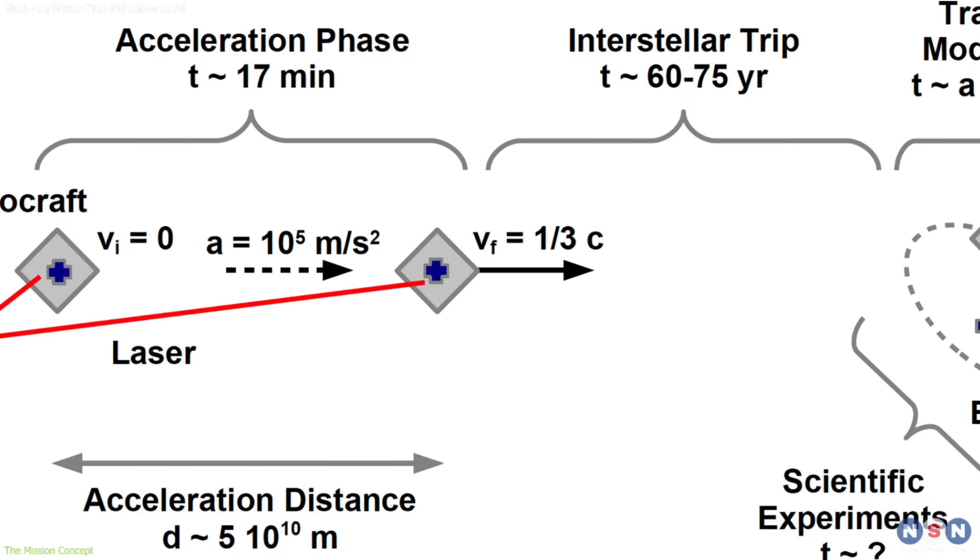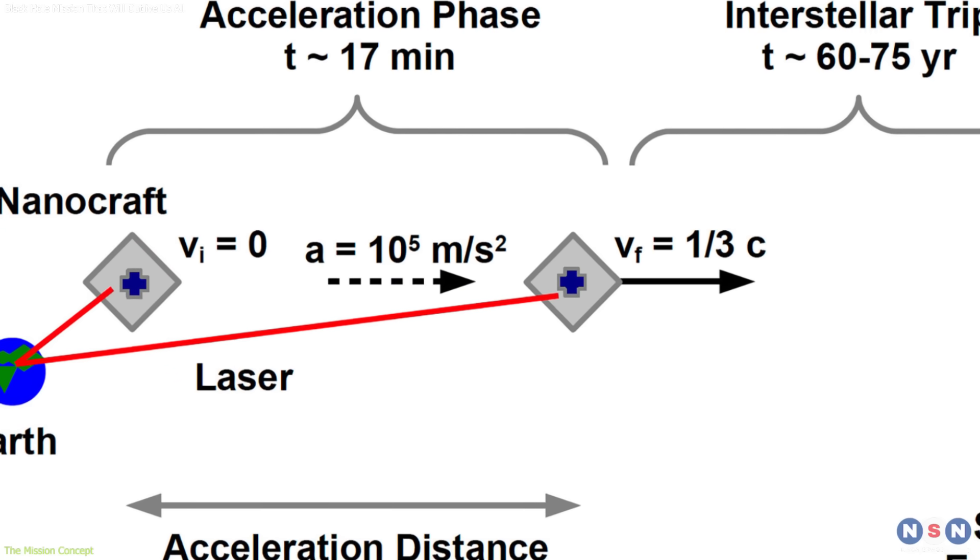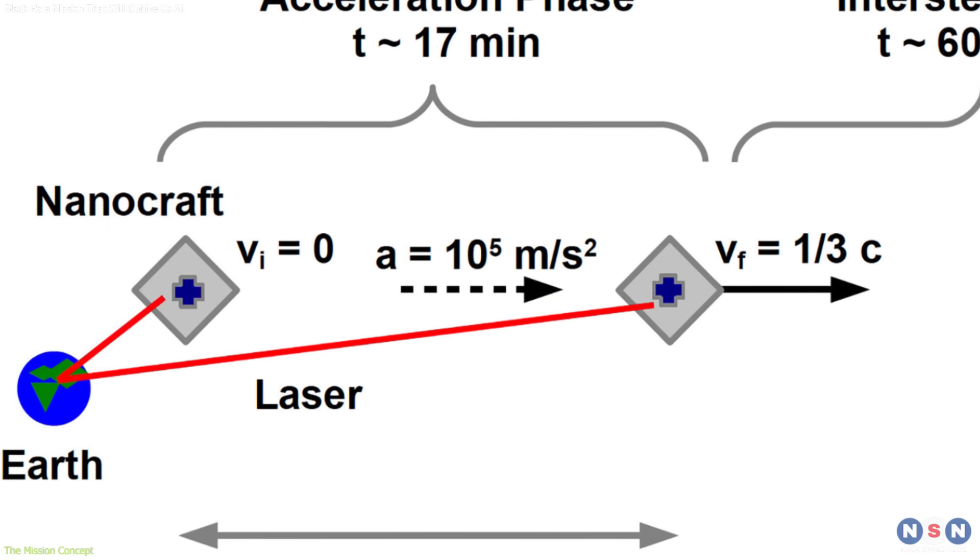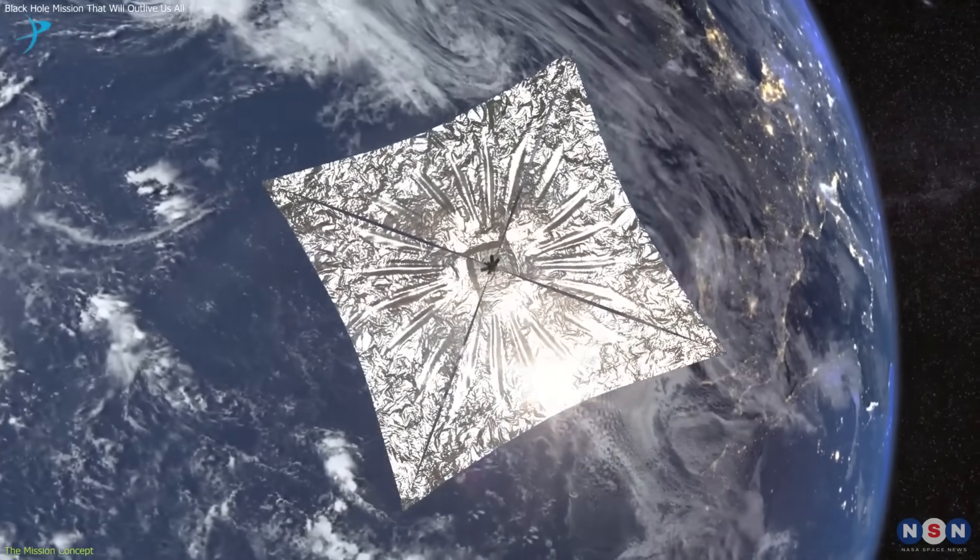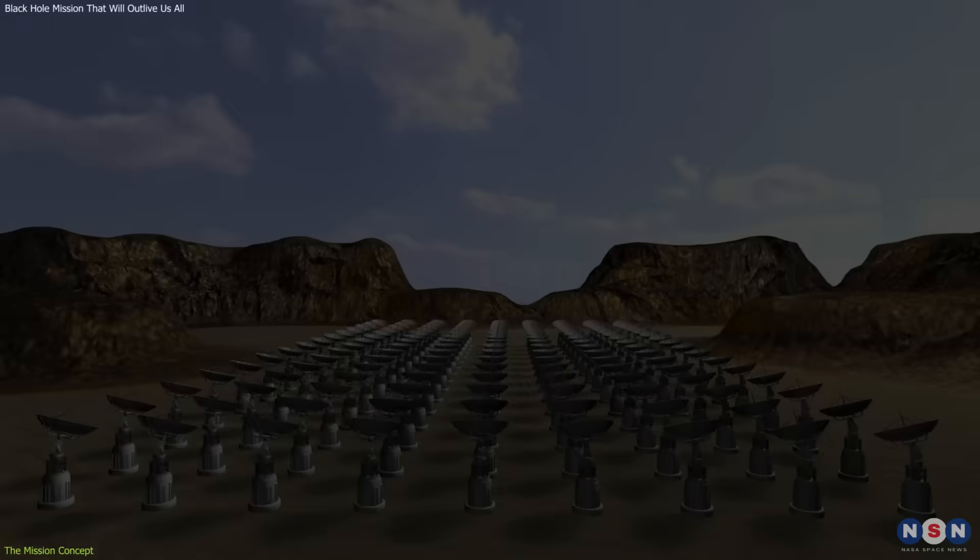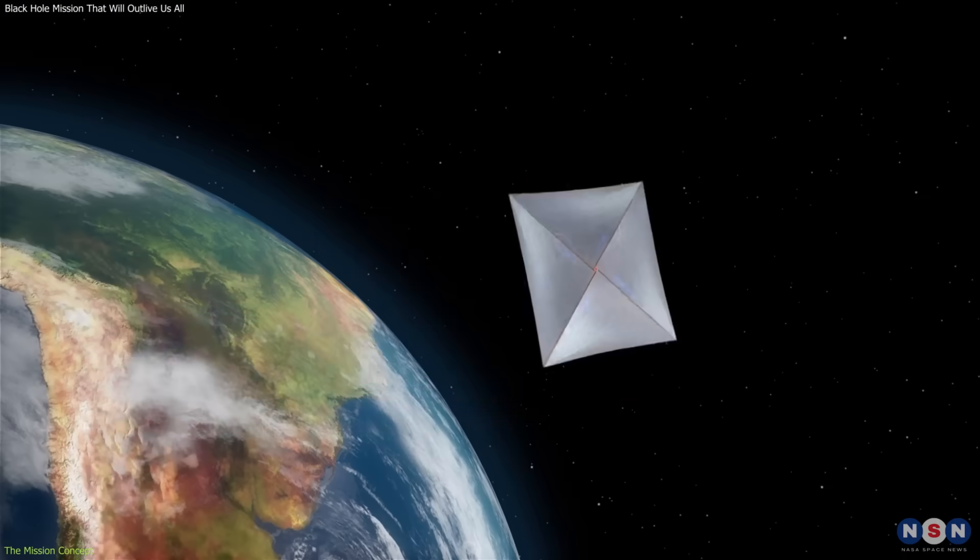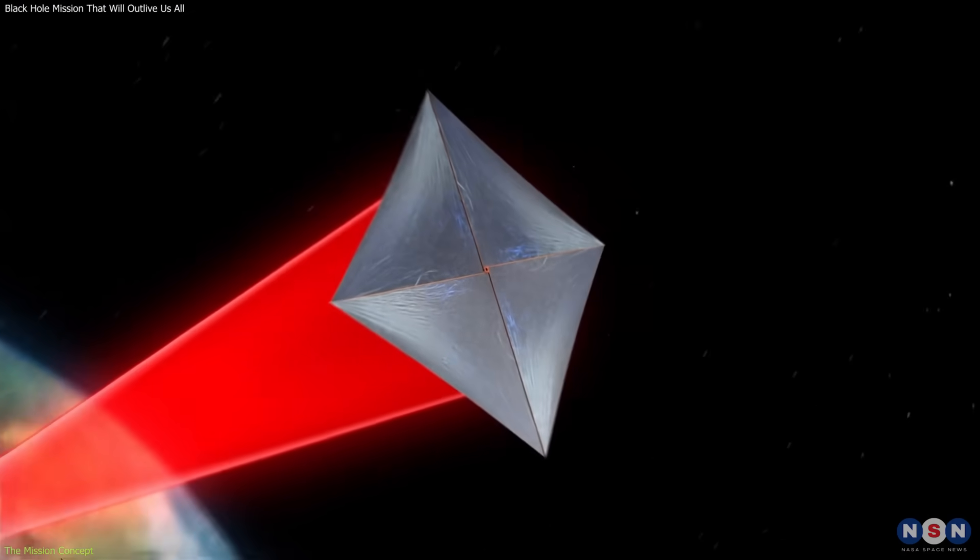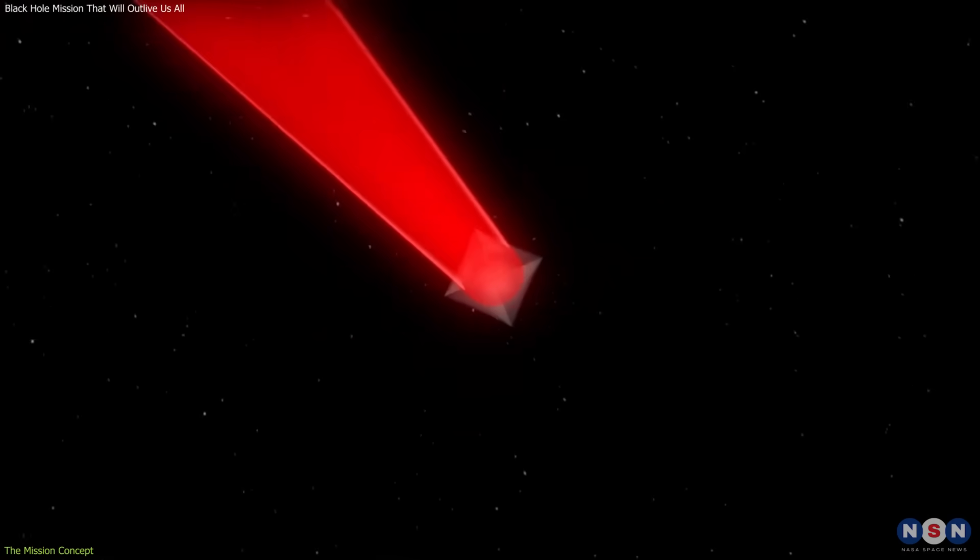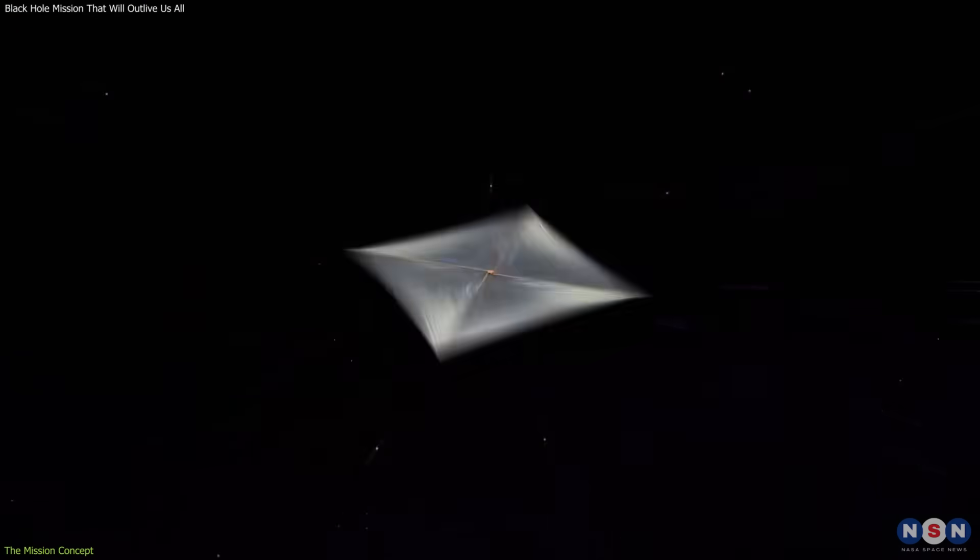At the heart of the proposal is the nanocraft, a spacecraft weighing only a few grams built around a microchip and a thin light sail. Instead of rockets, it would be accelerated by a powerful beam of lasers from Earth. The pressure from this light would push the sail to around 100,000 kilometers per second, one-third the speed of light.